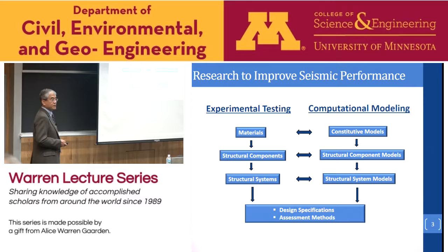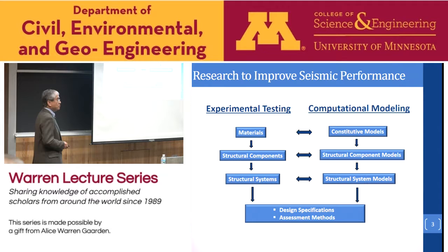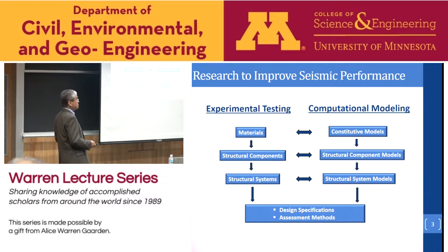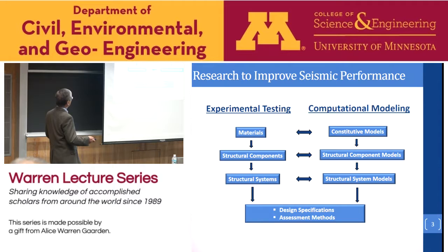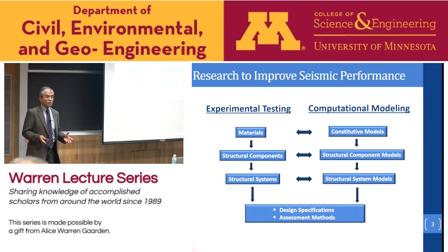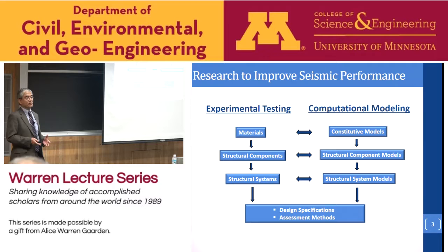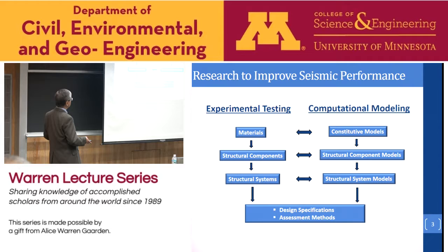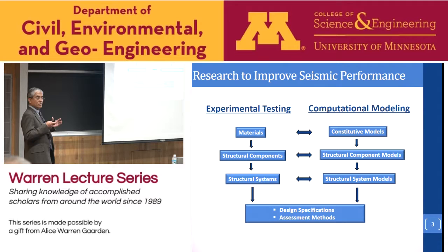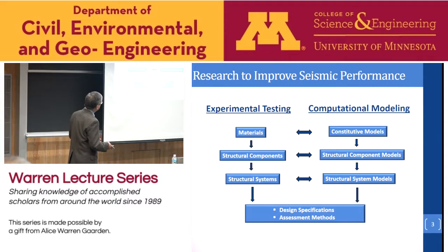The best way to develop methods to improve the performance of structures in earthquakes is through experimental research as well as computational modeling. In Minnesota, you have outstanding experimental facilities for that purpose, and many distinguished experimentalists and modelers working on this subject. The behavior of a structure in an earthquake is extremely complicated — it can cause large damage like fracture and crushing of concrete, fracture of reinforcement, and the interaction of concrete and masonry with steel reinforcement. Experimental testing is the best way to understand such behavior and also to calibrate our analytical models.